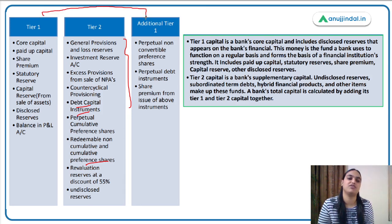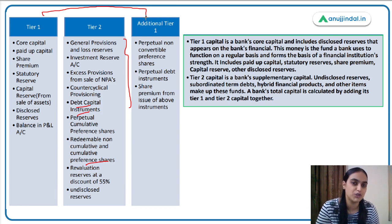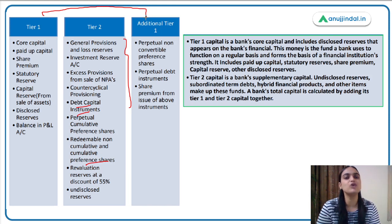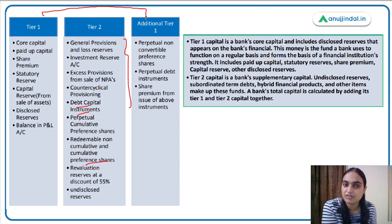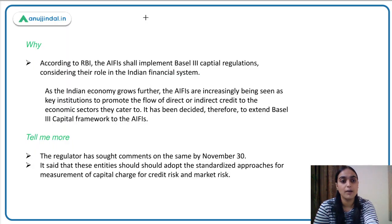The Capital Conservation Buffer, as the name suggests, involves conserving certain capital in the form of a buffer that will be helpful at times of need. When things are going well, you keep aside certain capital so that when a loss or crisis situation comes up and you are facing major losses, you can utilize that capital. That is essentially what the Capital Conservation Buffer is.